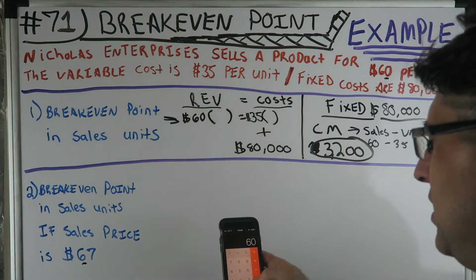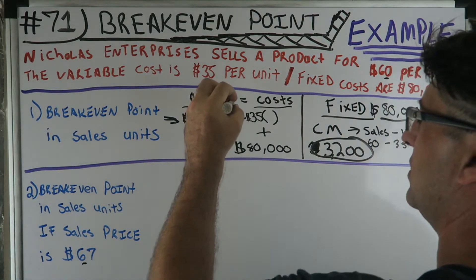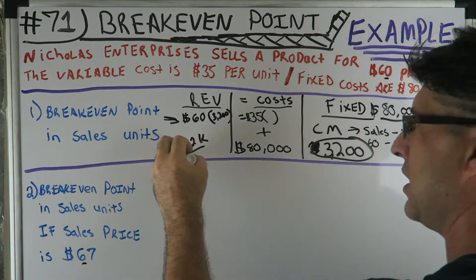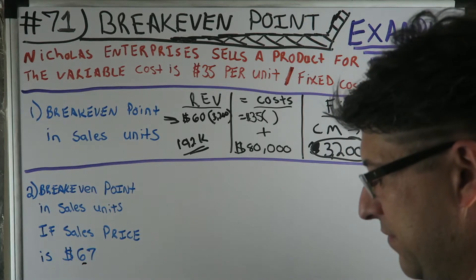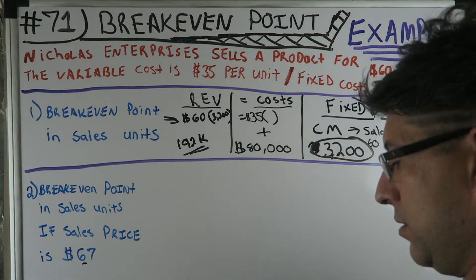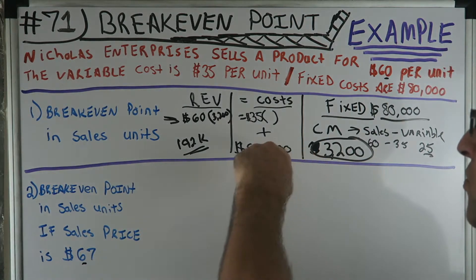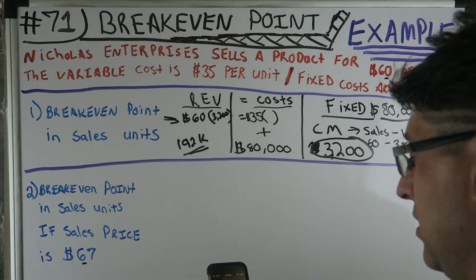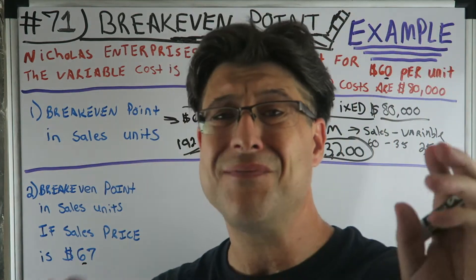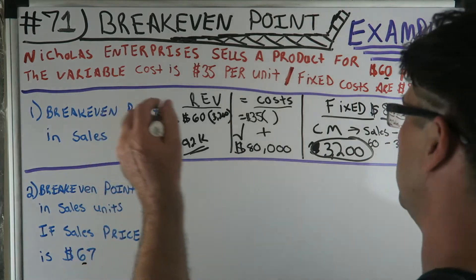Let's check the validity. Revenue: $60 times 3,200 units equals $192,000. Now costs: $35 per unit times 3,200 equals $112,000, plus $80,000 fixed equals $192,000. Both sides equal $192,000 — it checks out. The answer to number one is 3,200 units.